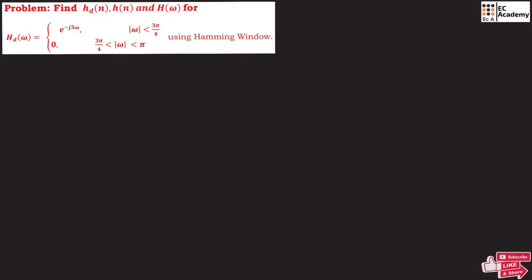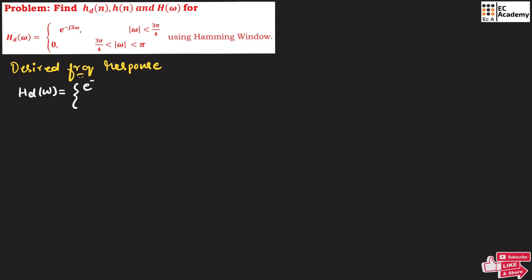In this lecture, let us understand a problem to find the ideal impulse response, the impulse response and frequency response. The desired frequency response is given: H_d(ω) equals e^(−j3ω) for |ω| less than 3π/4, and H_d(ω) equals 0 for |ω| ranging between 3π/4 and π.